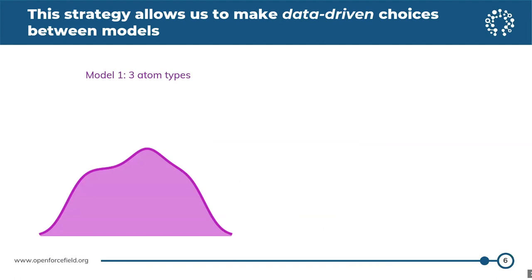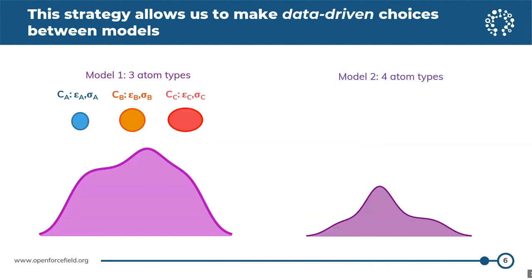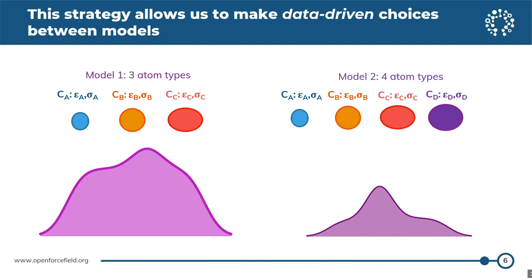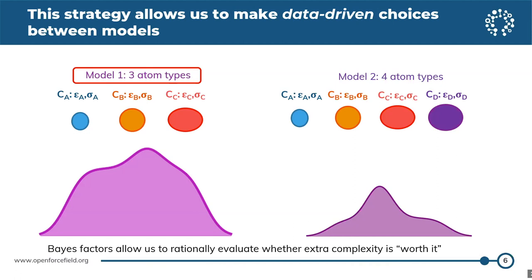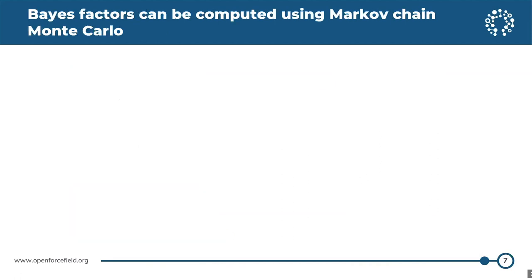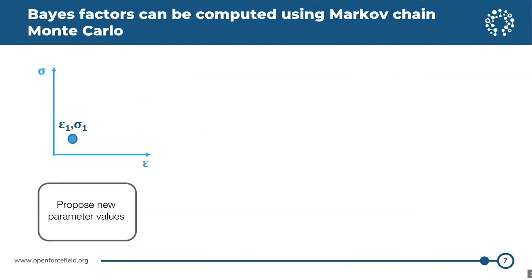This allows us to make data-driven choices between models. For example, if we go from a model with three atom types to a model with four atom types — similar to what Mike Gilson was looking at — and we see that the Bayes factor favors the model with three atom types, then we can say it's not really worth it to add that extra atom type. We need a way of computing these posterior distributions, and because these are black box problems, we can't do this analytically — we have to use Monte Carlo sampling.